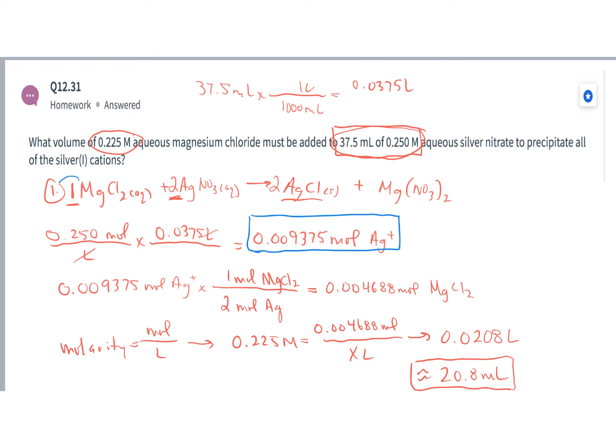And then once we found how many moles of silver we had in solution, we used the stoichiometry from the balanced chemical equation to relate moles of silver to moles of magnesium chloride that I'd have to add. Because they're in that 1 to 2 ratio, I used that to find the moles of magnesium chloride that I'd have to add to solution.